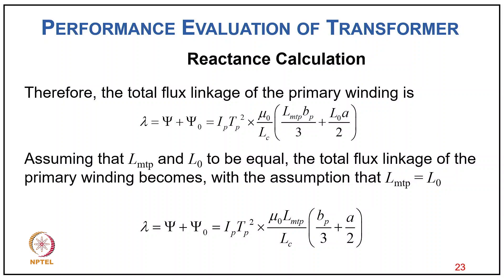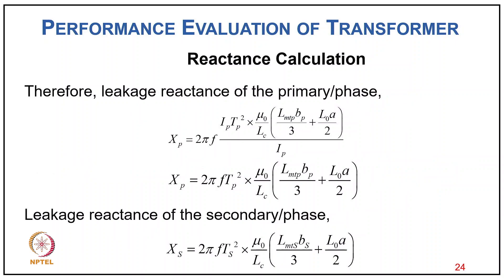With the assumption that LMTp = L0, the total flux linkage becomes λ = Ip×Tp² × μ₀×LMTp/Lc × [bp/3 + a/2]. Therefore the leakage reactance of the primary winding per phase is Xp = 2πf×Tp² × μ₀/Lc × [LMTp×bp/3 + L0×a/2], and similarly the leakage reactance of the secondary winding is Xs = 2πf×Ts² × μ₀/Lc × [LMTs×bs/3 + L0×a/2].